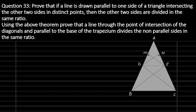To solve this question, we have drawn a triangle ABC in such a way that line DE is parallel to BC. So we write down: Given — DE is parallel to BC. And what we have to prove: the other two sides are divided in the same ratio, which means AD divided by DB is equal to AE divided by EC.